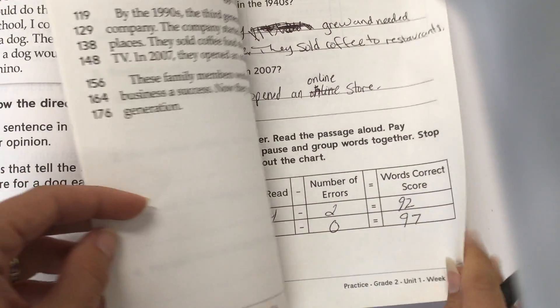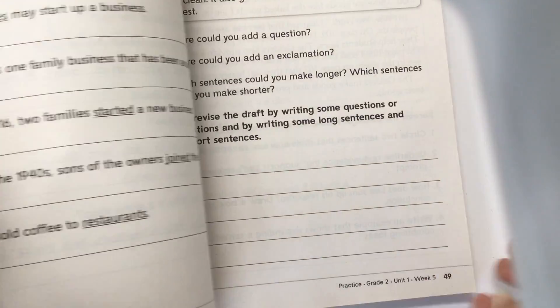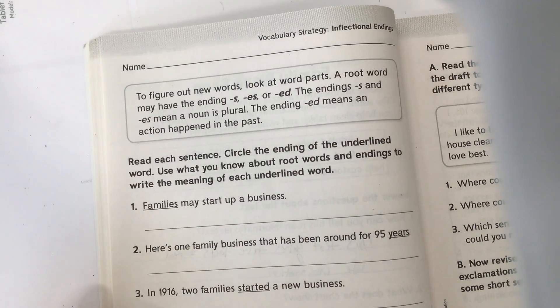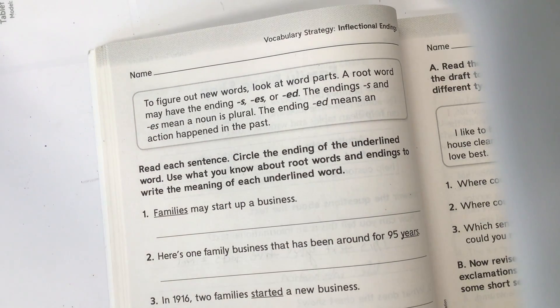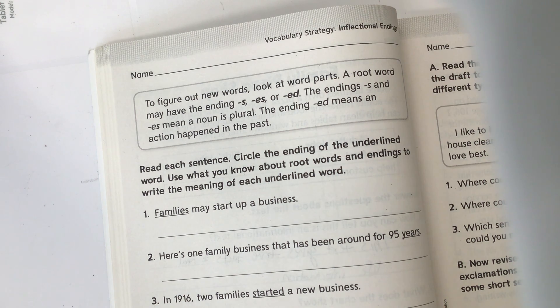Let's go to page 48. Still working on vocabulary strategy and inflectional endings. To figure out new words, look at word parts. A root word may have the ending S, ES, or ED.